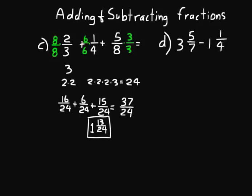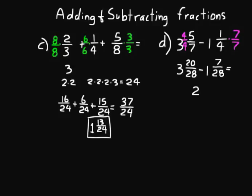Let's do another one: 3 and 5/7 minus 1 and 1/4. We're doing subtraction here and don't have common denominators, so we look at the denominators 7 and 4 and think of prime factors. Seven is a prime number; 4 is 2 × 2, so our LCM is 7 × 2 × 2 = 28. Multiply 5/7 by 4/4, and 1/4 by 7/7. We write 3 and 20/28 minus 1 and 7/28, which equals 2 and 13/28. We can't reduce that, so we leave it as our answer.